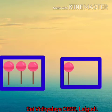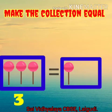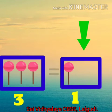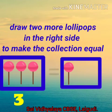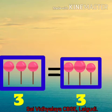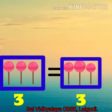Let us see some examples. Here we have three lollipops in the left side and one lollipop in the right side. The number of objects is less in the right side. We have to draw two more lollipops in the right side to make the collection equal. Now we have three lollipops on both the sides. Now the collection is equal.